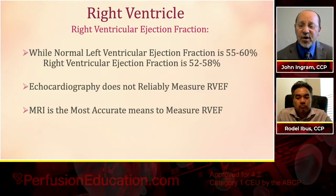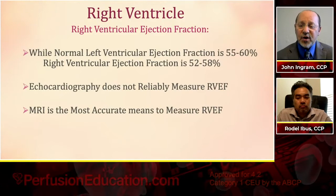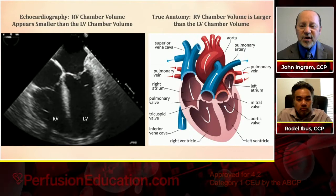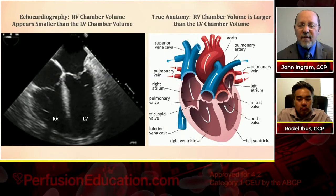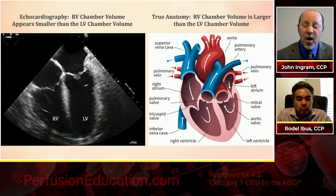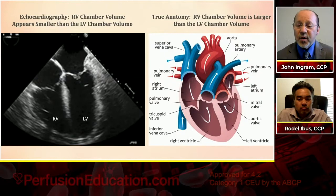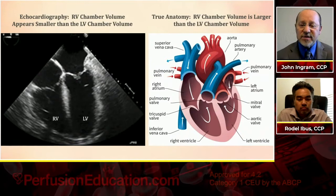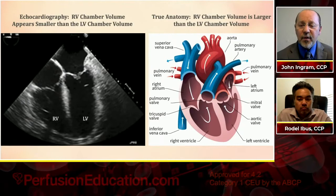Normal left ventricular ejection fraction is about 55–60%, while right ventricular ejection fraction is about 52–58%. Echocardiography is not a reliable way to measure right ventricular ejection fraction — MRI is better. On a four-chamber echocardiographic view, the right ventricle appears smaller than the left, but in normal anatomy diagrams, the right ventricle is actually larger. It's very difficult to get a perfect side-by-side section of these two ventricles, and many of us have the impression the left ventricle is larger — but do we really know that?